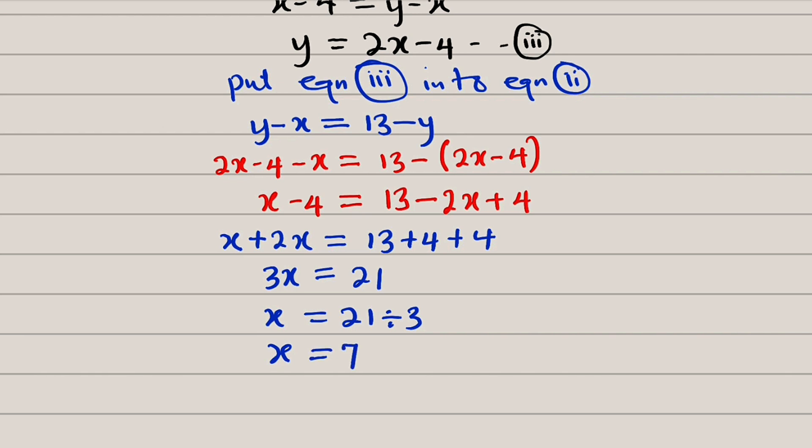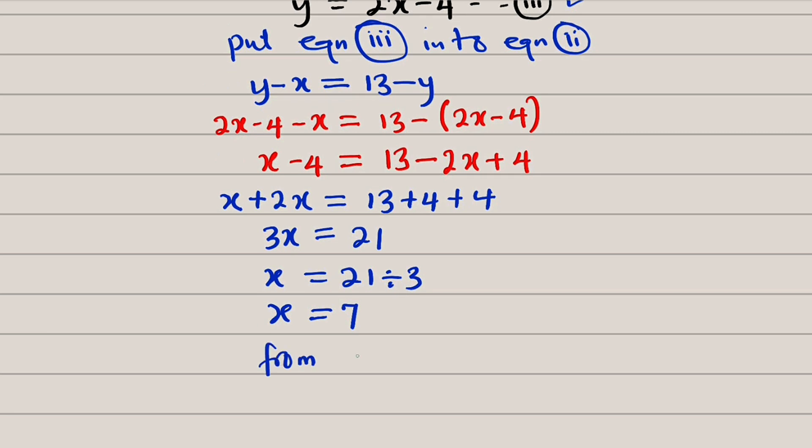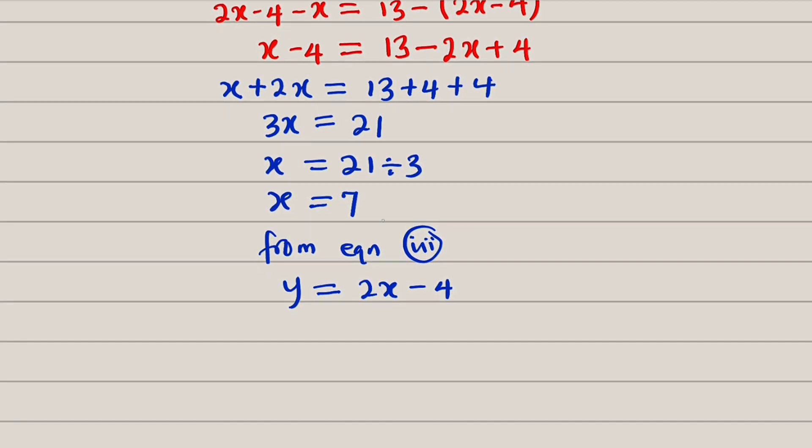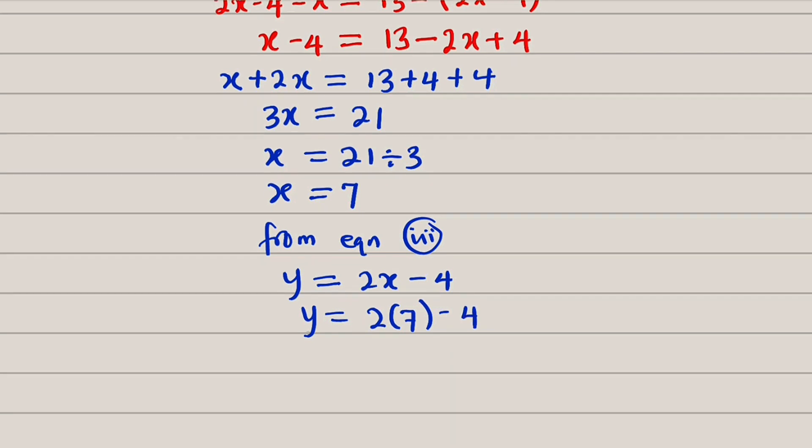If x is equal to 7, we can use this equation number 3 to find the value of y. So from equation 3, let me write it. Y is equal to 2x minus 4. Y equals 2x minus 4. And x is equal to 7. So we can put it here instead of x. Y equals 2 times 7 minus 4. Finally, y equal to 2 times 7 is 14. Then 14 minus 4 is 10. Y equal to 10.